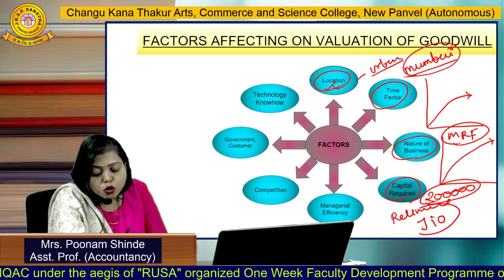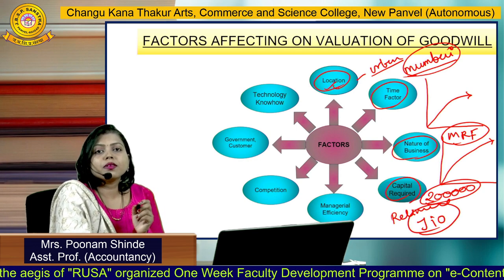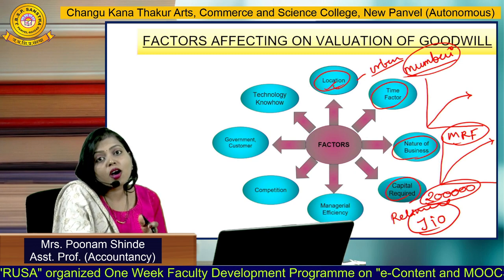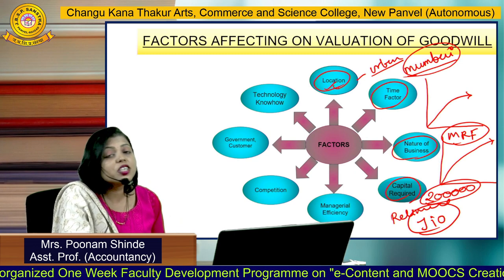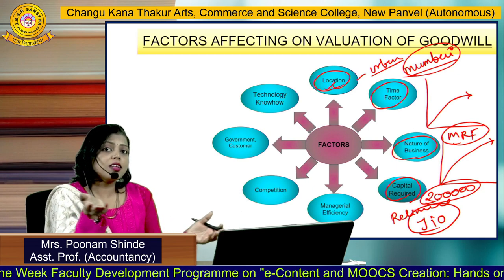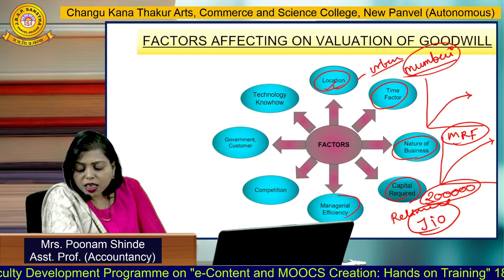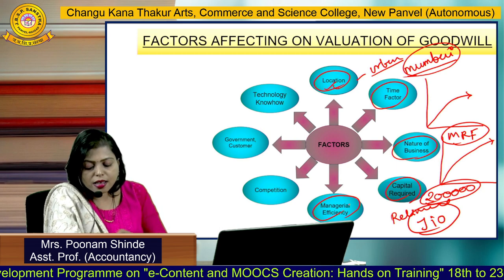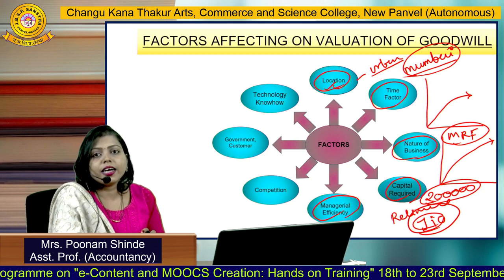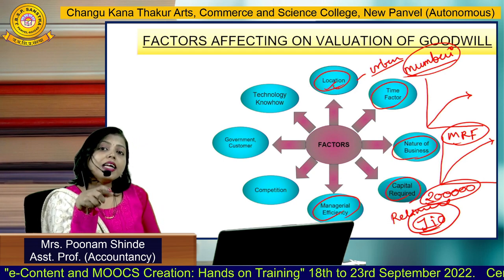For example, Reliance started Jio with huge capital using the blue ocean strategy, pouring in more and more capital — that is why they got immediate goodwill. Managerial efficiency also matters — take Reliance again, they managed Jio very well. So the quality of management also affects goodwill.